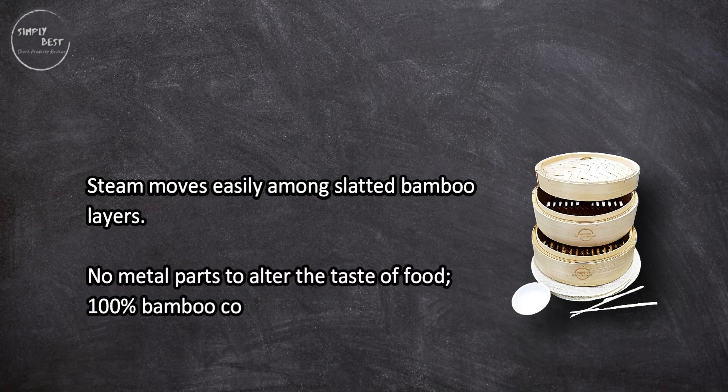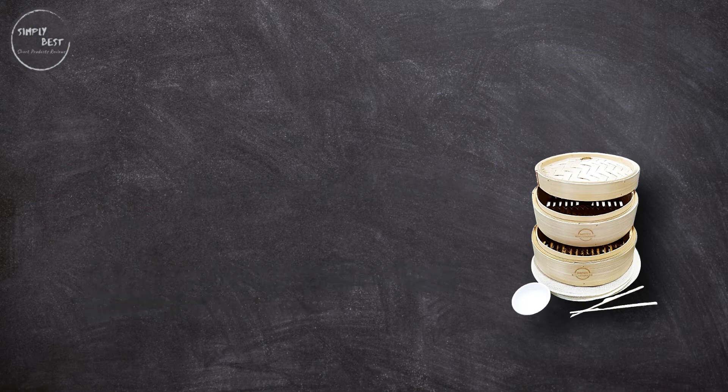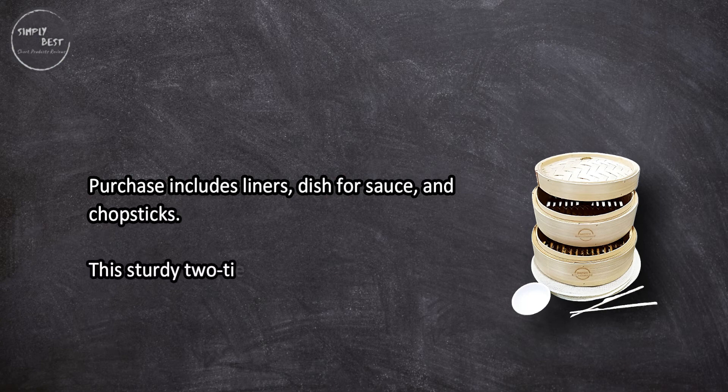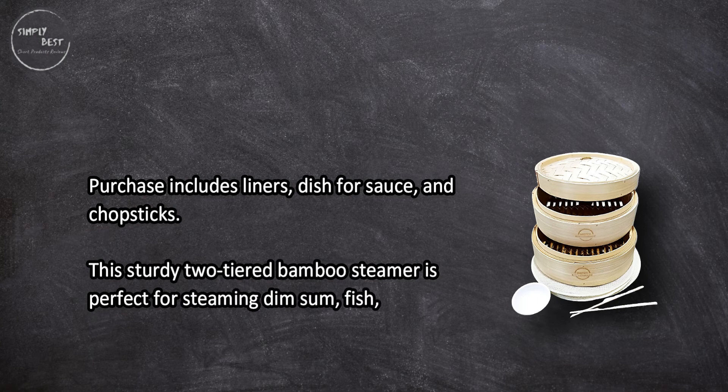Purchase includes liners, dish for sauce, and chopsticks. This sturdy two-tiered bamboo steamer is perfect for steaming dim sum, fish, vegetables, and more.